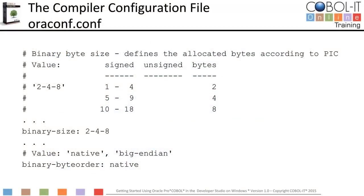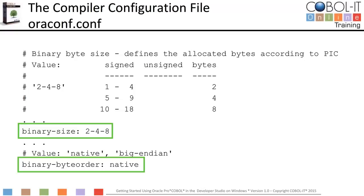In the compiler configuration file, we have to make two changes to the default settings. We have to change the binary size setting to 248, and we have to change the binary byte order setting to native. After making these modifications, we will save our new compiler configuration file and rename it oraconf.conf. oraconf.conf should be located in the config sub-directory of your COBOL IT installation.